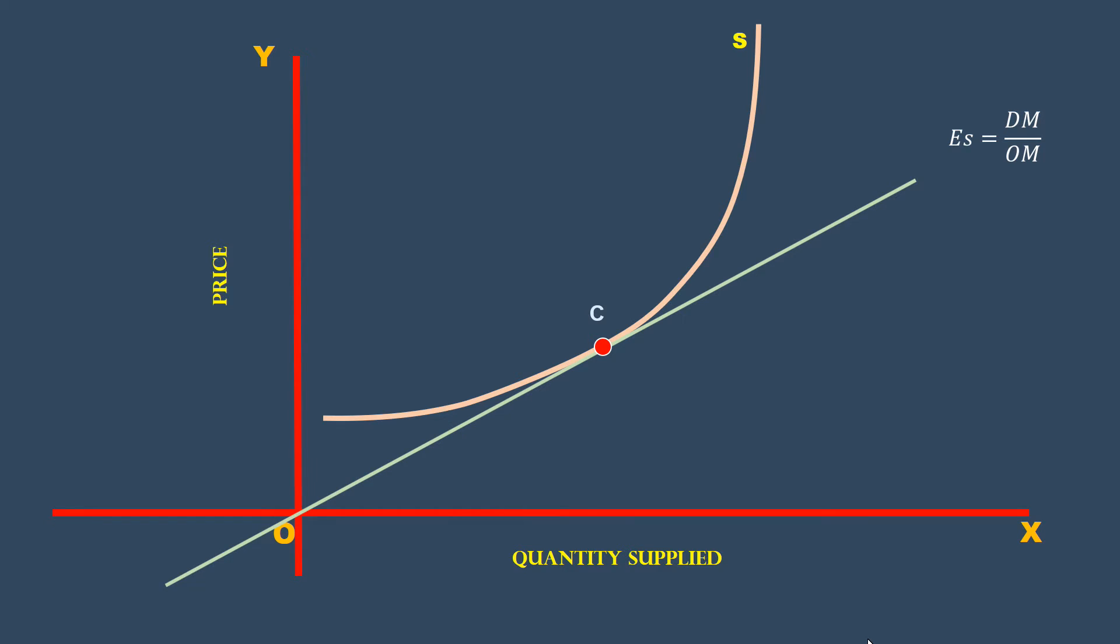Draw a tangent through point C. Since the tangent passes through the origin, the elasticity at point C is 1. Apply the formula Dm is equal to Om. Hence, elasticity of supply is unitary.